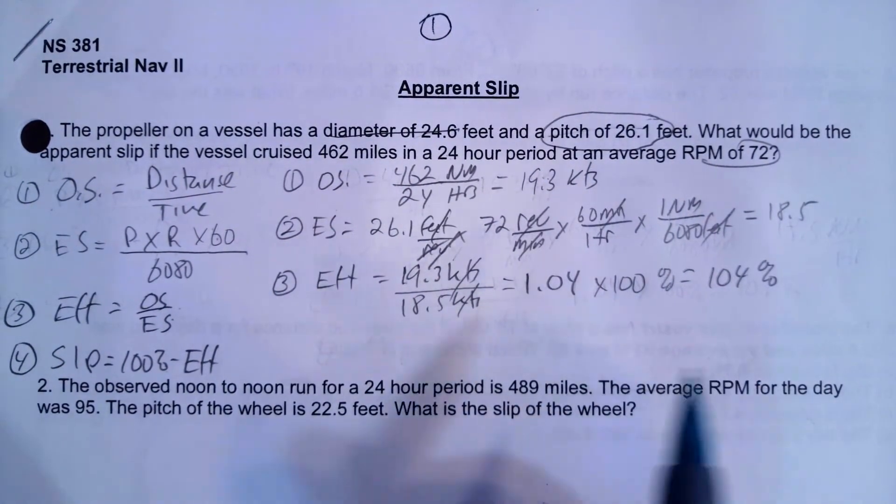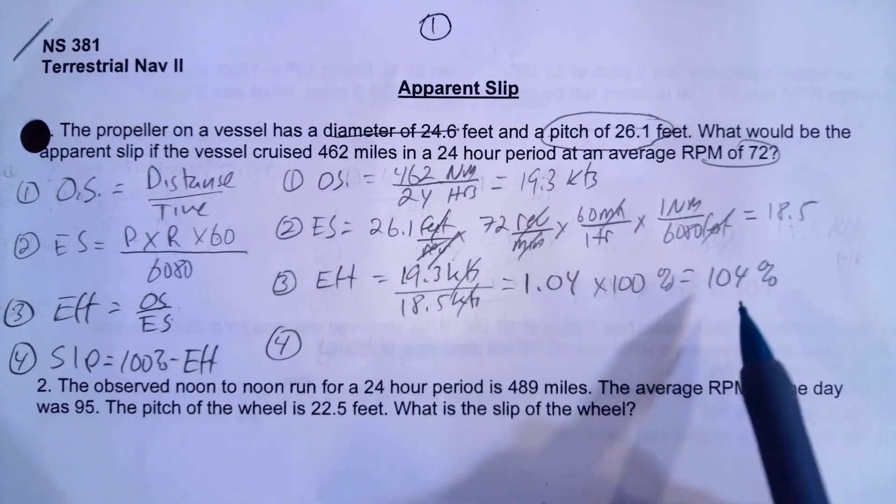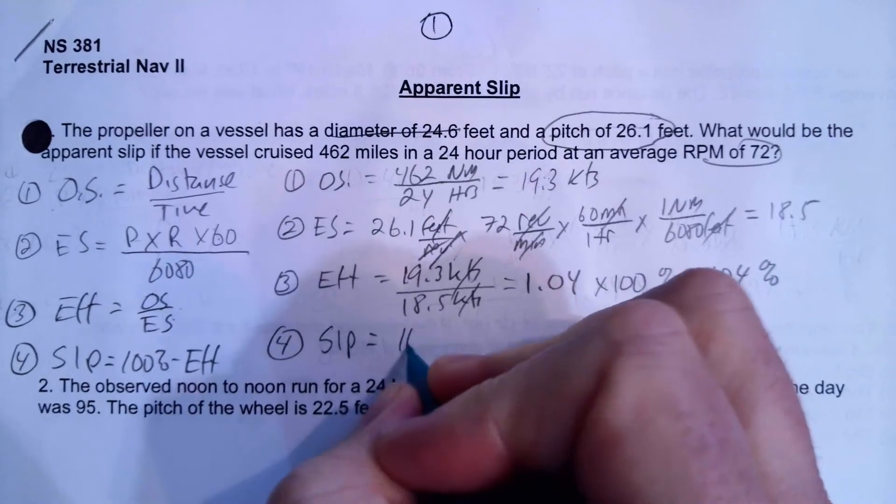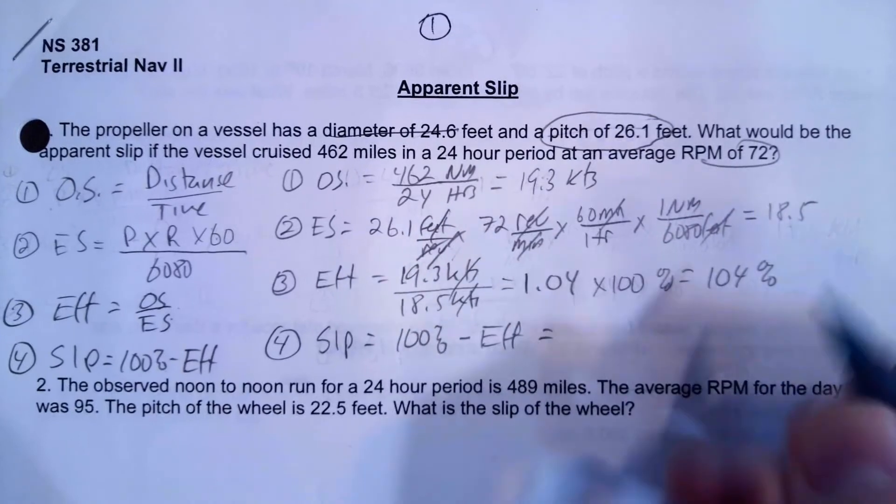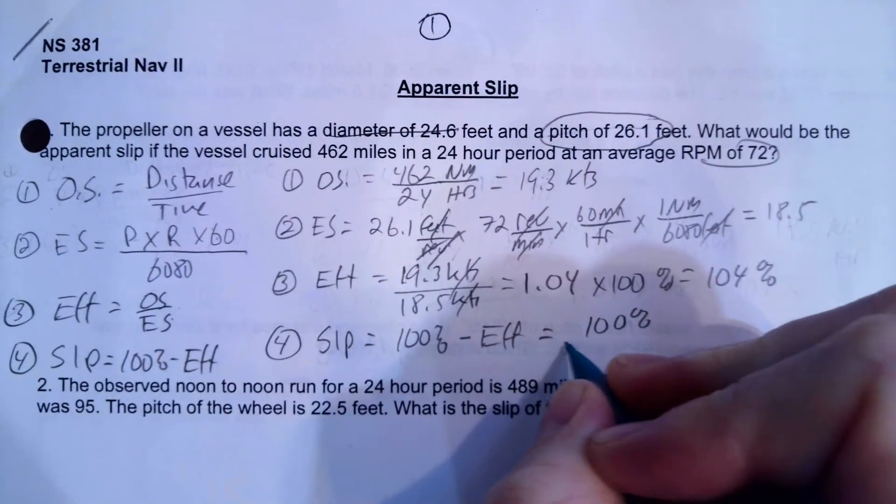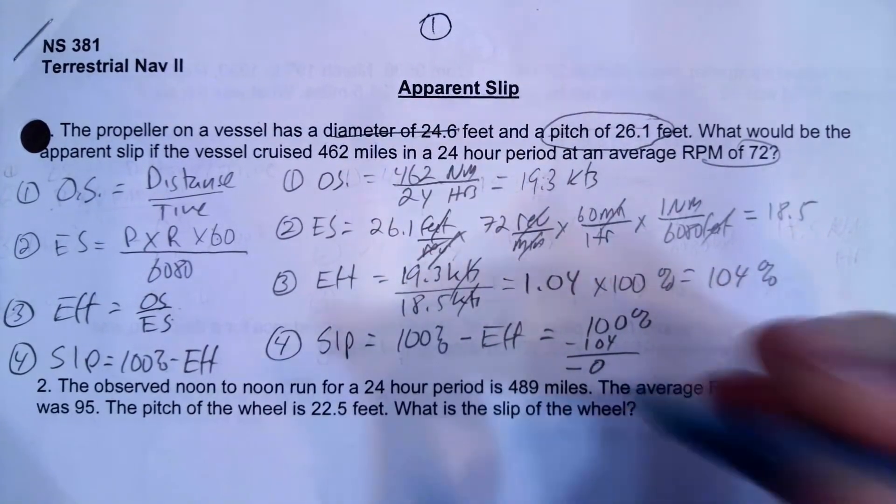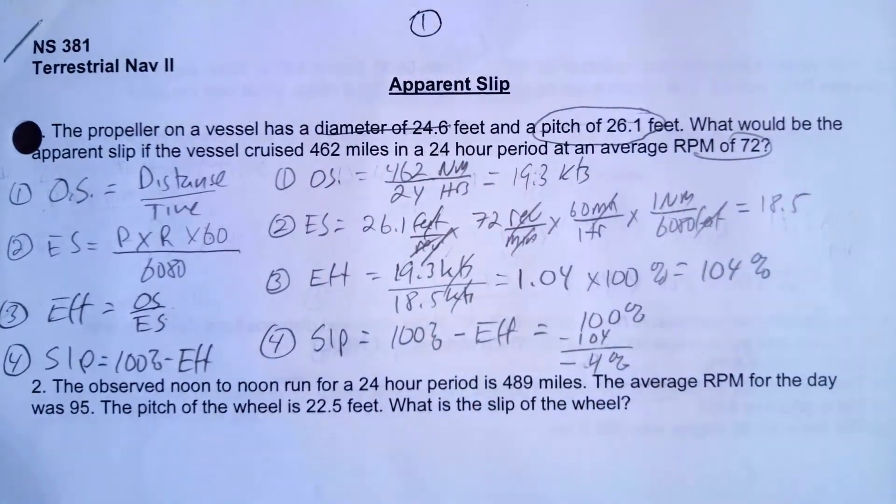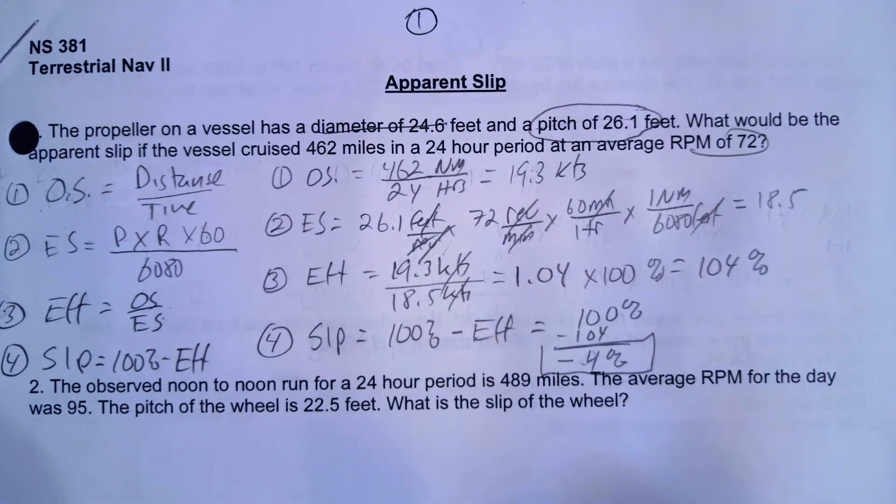That's our efficiency, but typically we also want to know what our slip is and our slip is going to be the complement of efficiency. So slip is going to equal 100% minus efficiency. So that's going to equal 100% minus 104, which is going to be negative four. Negative four percent. And that is our efficiency. If we had taken it out one more decimal, it would have been negative 3.8 or 3.9%. And that's how we do those problems.